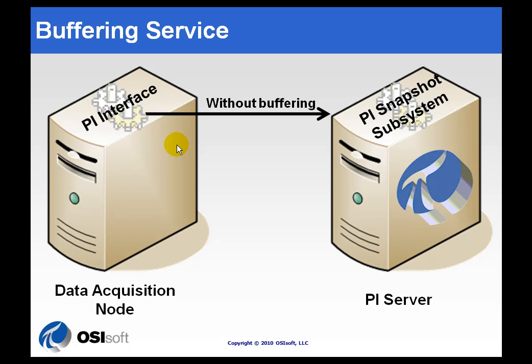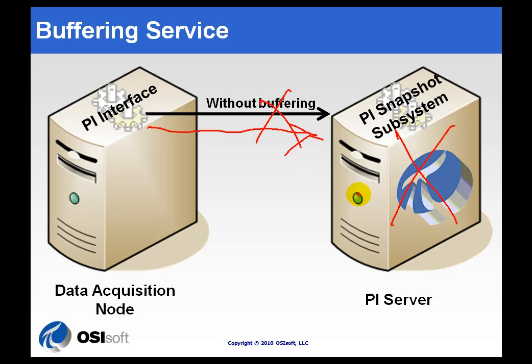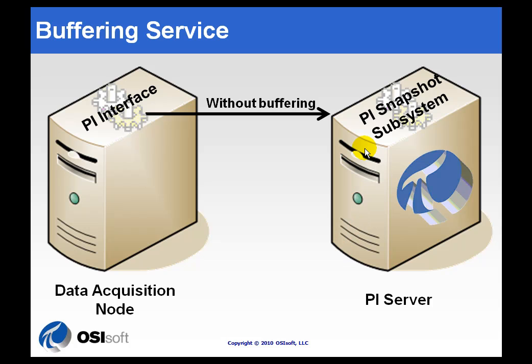By buffering, what we mean is if the interface is collecting data and sending data, as it normally does, over to the PI Server, if something happens to the PI Server — let's say it crashes, or the network crashes, or something less severe, like the server has been brought down to update the operating system or upgrade PI — well, if buffering is not enabled, then you're simply going to lose the data.